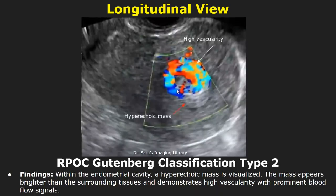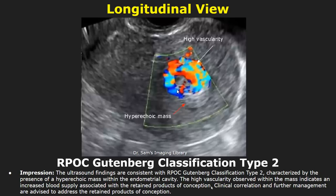In the findings of a type 2 RPOC, there is a hyperechoic mass with high vascularity seen with prominent blood flow signals. You can mention the hyperechoic mass with high vascularity in the impression as well, and then write about clinical correlation.